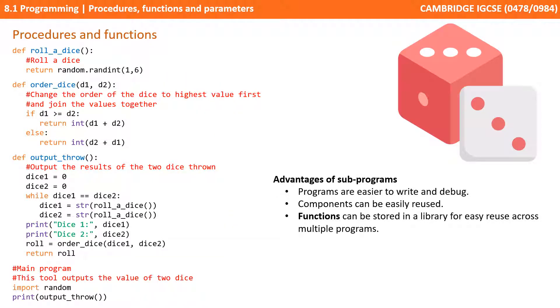There are several advantages to using subroutines like procedures and functions. Overall they make your programs easy to write and also to debug. These subroutines or functions can be easily reused and functions themselves can be stored in a library for easy reuse across multiple programs.